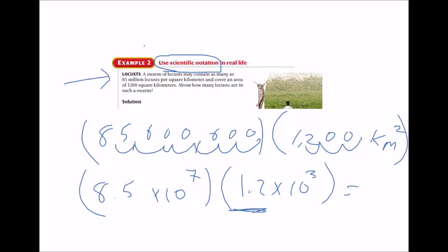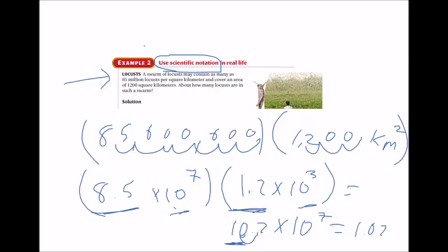You multiply the numbers in front together and add the exponents because they're being multiplied. So we get 10.2 times 10 to the 7th. However, the leading number must be between 1 and 10 to be in proper scientific notation, so we move the decimal one more place to get 1.02 times 10 to the 8th power.